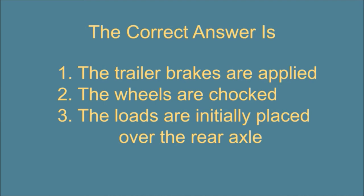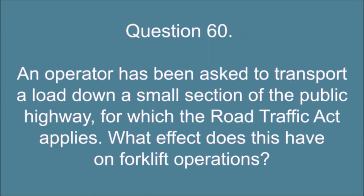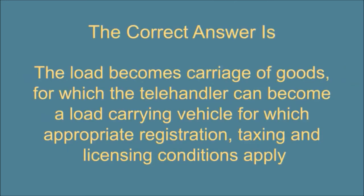Question 60. An operator has been asked to transport a load down a small section of the public highway, for which the road traffic act applies. What effect does this have on forklift operations? The correct answer is: The load becomes carriage of goods, for which the telehandler can become a load carrying vehicle for which appropriate registration, taxing and licensing conditions apply.